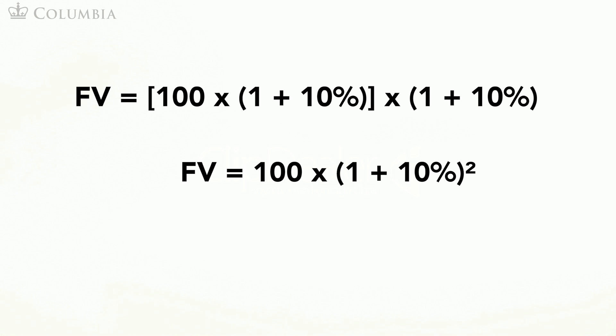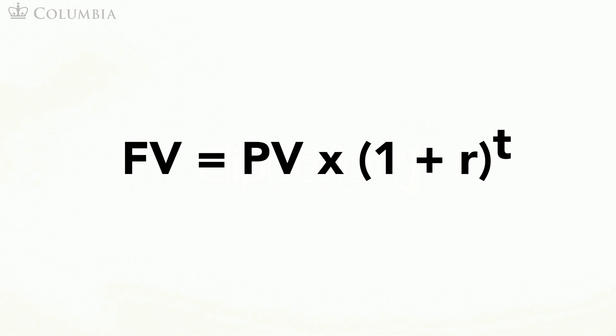We can generalize this formula to any number of periods. This is the general formula. In this formula, FV stands for the future value, PV stands for the present value and is the amount you invest today, R is the rate of return per period, and T is the number of periods you invest your money for.